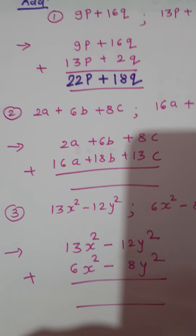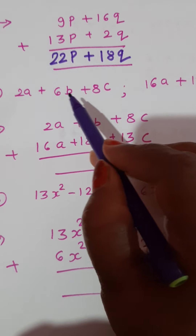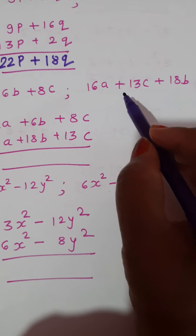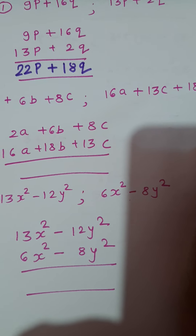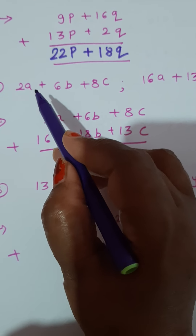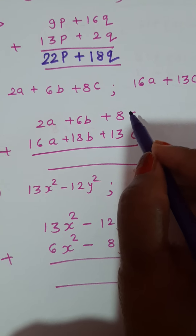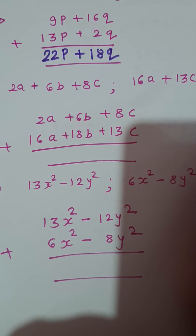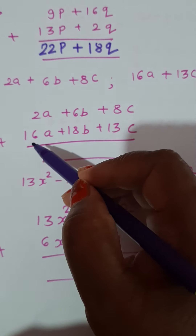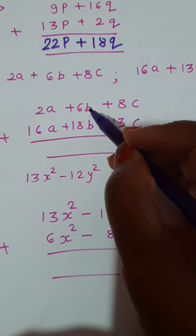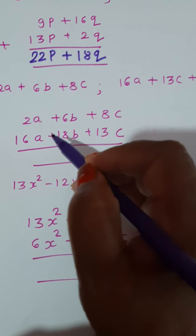Let's see the second problem. The first algebraic expression is 2a plus 6b plus 8c. We have to add the second algebraic expression: 16a plus 13c plus 18b. Write down the first expression as it is: 2a plus 6b plus 8c. While arranging the second expression, see the like terms very carefully. Downside of 2a write 16a, downside of 6b write 18b. Don't write 13c there — we can add only like terms.